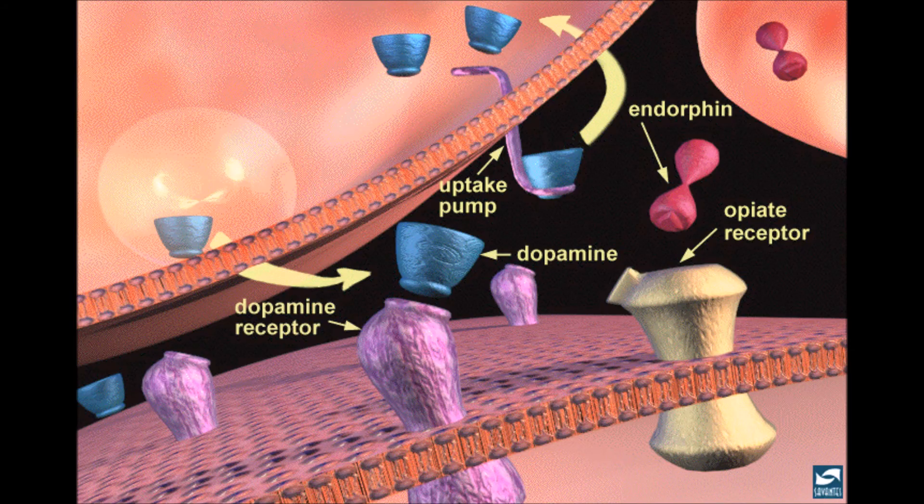The heroin molecules reduce the amount of GABA released. During normal neurotransmission, GABA reduces the amount of dopamine that gets released into the nucleus. The heroin inhibits the GABA inhibitor, making it so that there is an increase in dopamine levels, therefore increasing feelings of pleasure and euphoria.